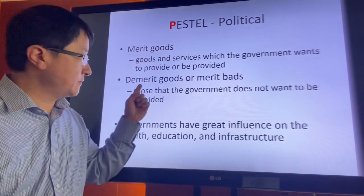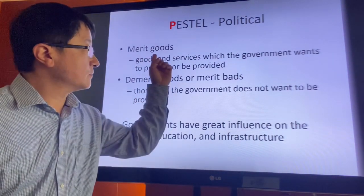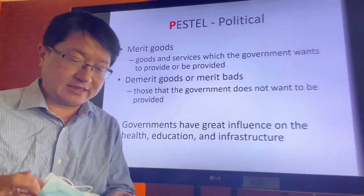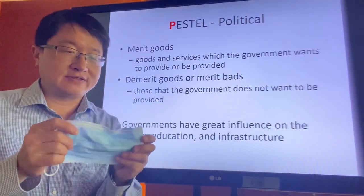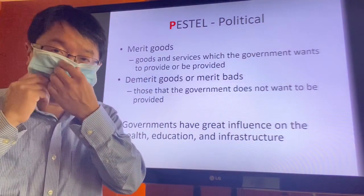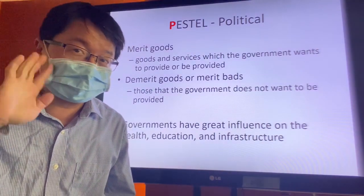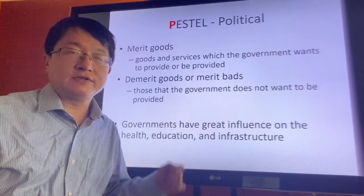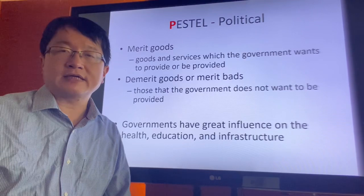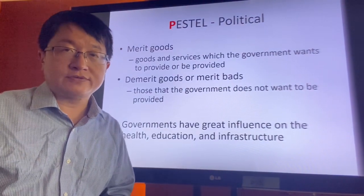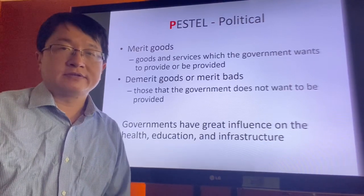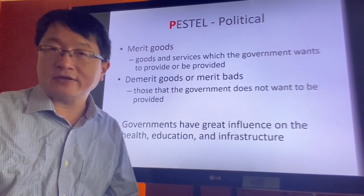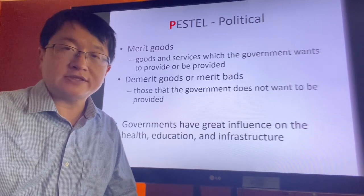There are merit goods and demerit goods. Merit goods are goods that are wanted by a government. For example, nowadays many governments would like to order face masks, and many countries even impose trade restrictions on face masks so they can't export them to other countries. Demerit goods are goods not wanted by a government — for example, drugs, tobacco, alcohol — and some countries would even ban selling those products. So if you are a trader selling these products, you need to consider whether the law and policy in those countries will affect your business.